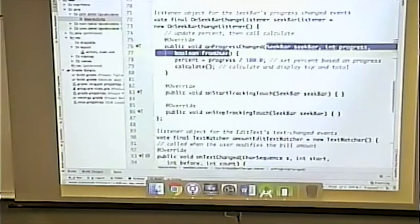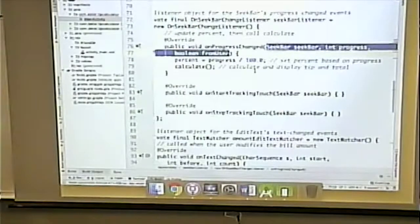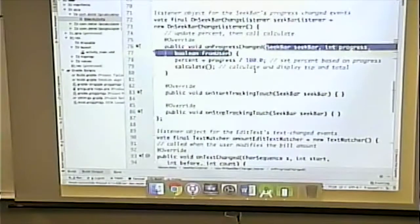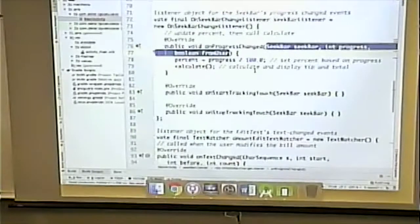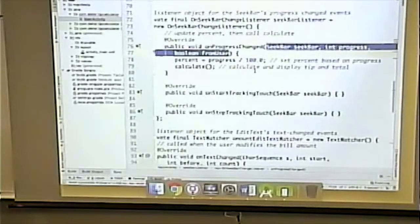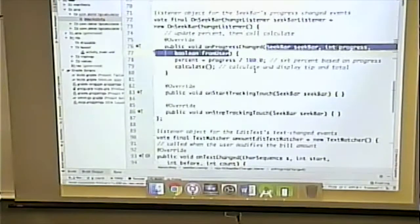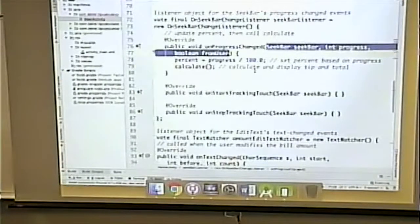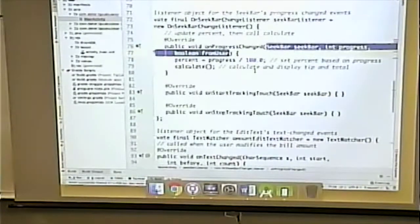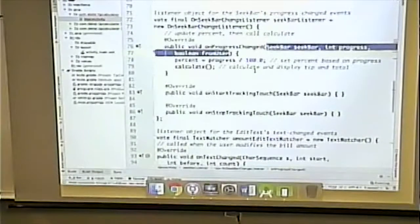Okay. For us though, we don't have to worry about any of that here. Because passed to this function is the actual value of the progress. So when the progress changes, this gets passed that as an argument. So we take that, divide by 100, and that's our percent. Okay. Percent, remember, is an instance variable.